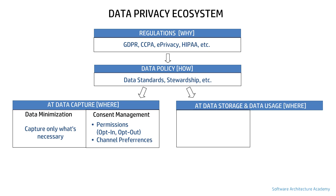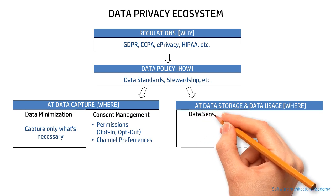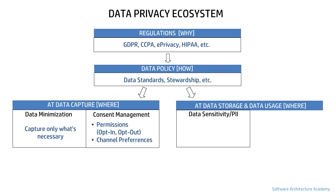Now let's discuss privacy during data storage and data usage. The first concept here is data sensitivity, which has rapidly evolved in recent years with multiple companies building products using emerging technologies to solve it. Data sensitivity is a process within an organization to find and classify sensitive information. A key term in this area is PII, which stands for personally identifiable information — data fields that can help identify an individual. Privacy law states that such information should be labeled and stored in a specific way.